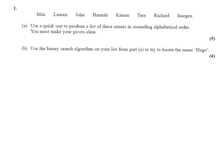Now part B of this question requires us to locate the name Hugo by using the binary search. A binary search has to be on an ordered list. So it says use the binary search on your list from part A, so we need to use the ordered list that we've just got.